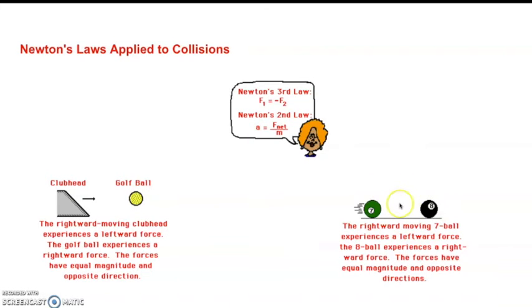And even in billiards, we've got a seven ball moving to the right. It hits a leftward force when the eight ball experiences a rightward force. The forces have equal magnitude in opposite direction. Again, when the seven hits the eight, the forces are equal but opposite.